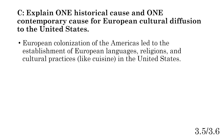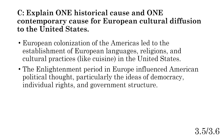For the historical cause: European colonization of the Americas led to the establishment of European languages, religions, and cultural practices like cuisine — including pizza — in the United States. When thinking about historical causes of diffusion, colonization and trading are typically the two best approaches. The Enlightenment period in Europe also influenced American political thought, particularly ideas of democracy, individual rights, and government structures, and politics is a big part of culture.